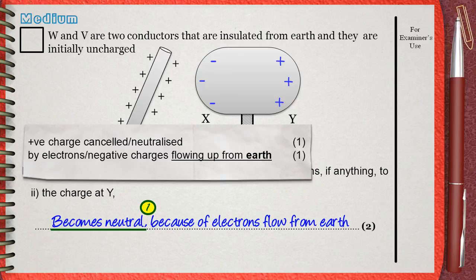The second mark is for the reason. You must say that this neutralization is because of the flow of electrons from Earth to the sphere. This is what we said here, electrons flow from Earth. This is the second mark.